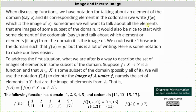Sometimes we want to talk about all of the elements that are images of some subset of the domain. It would also be nice to start with some element of the codomain, say y, and talk about which element or elements, if any, from the domain it is the image of. We could write 'those x in the domain such that f of x equals y,' but this is a lot of writing, and therefore we use special notation.